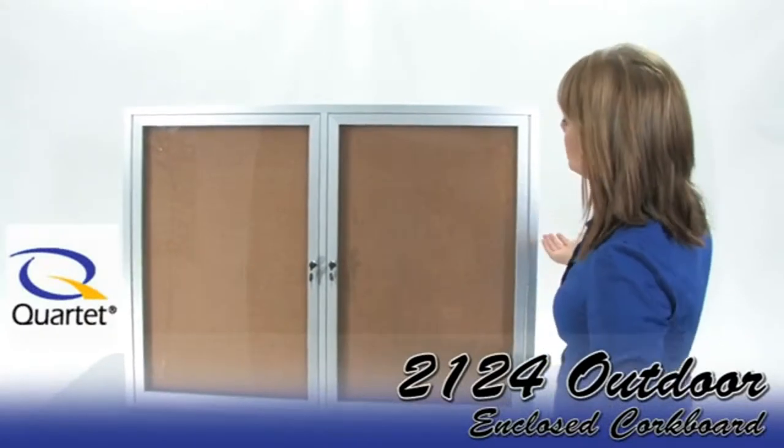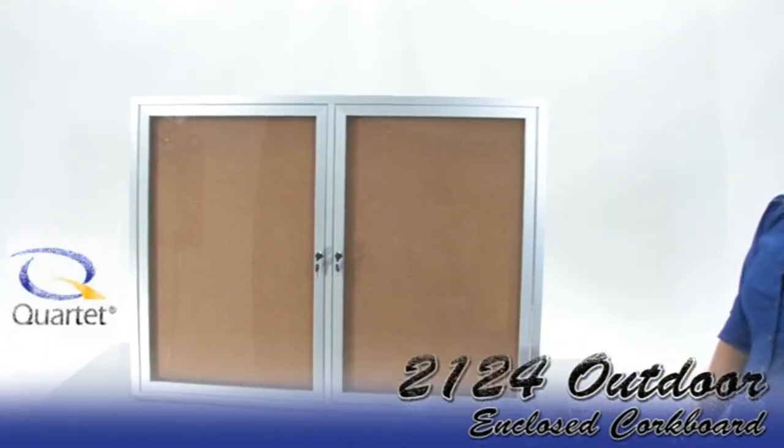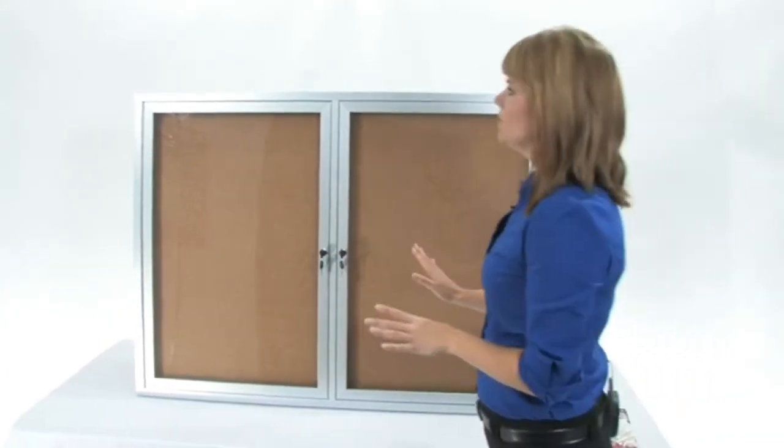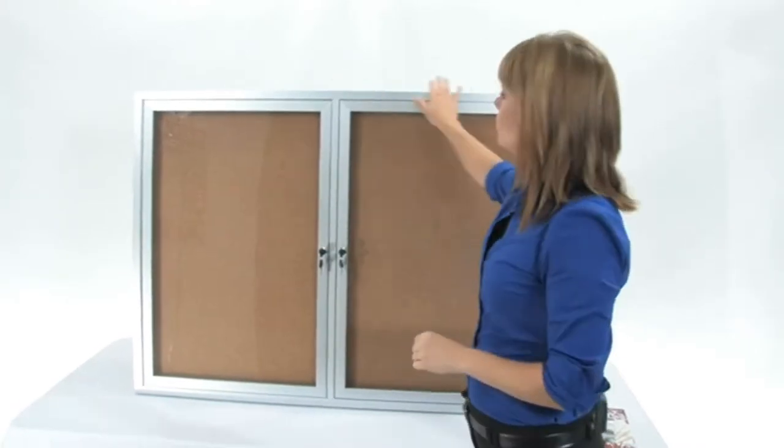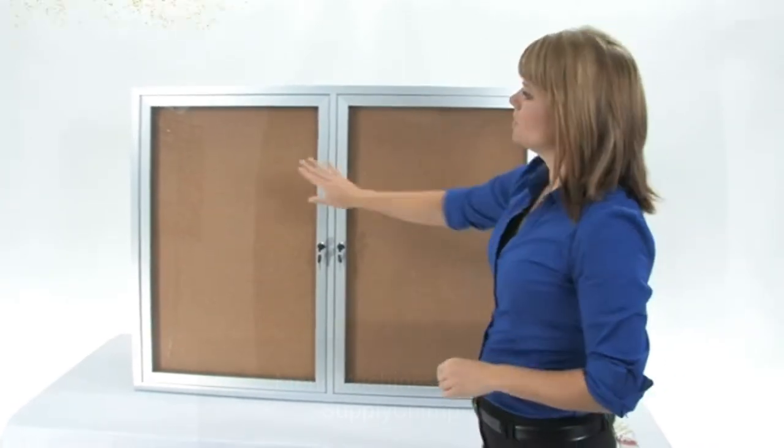This is the Quartet 2124 Enclosed Cork Board. It's for outdoor use and as you can see we've got a three foot by four foot aluminum frame and two display windows.